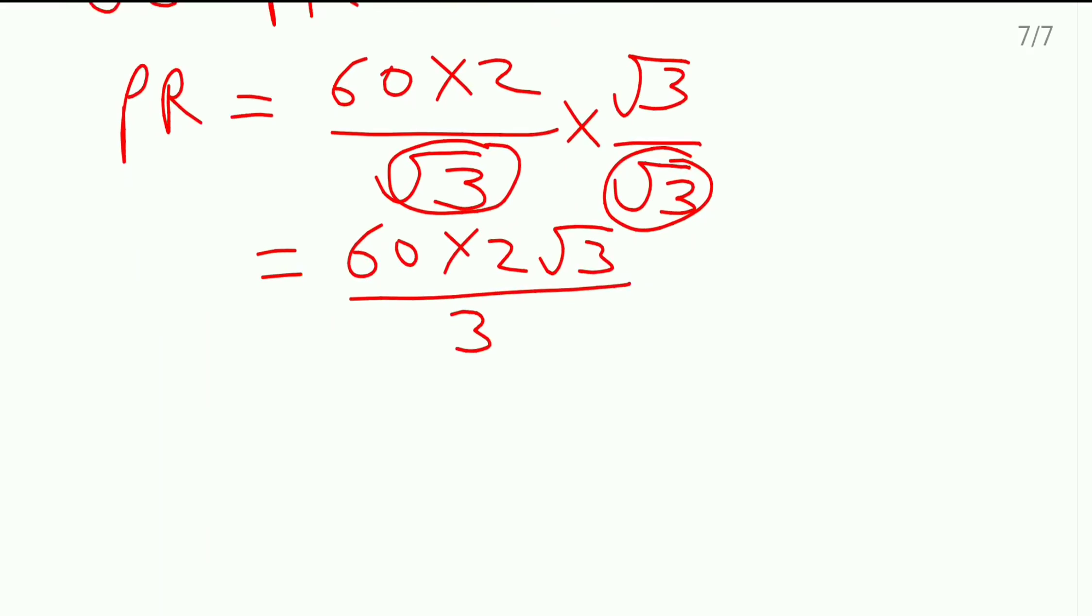We will show the cancellation. 3 into 1, 3 into 2, and this is 0 as it is. So 20 into 2, it became 40 root 3. Correct?